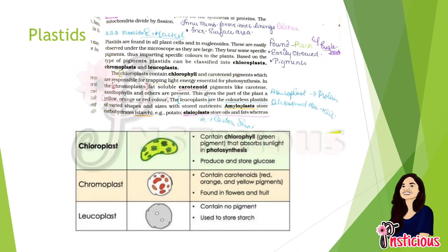Plastids were discovered by Haeckel and are found in plants and also in euglenoids. They have different types of pigmentation: chlorophyll is present in chloroplasts, and carotenoid pigments such as carotene and xanthophylls are present in chromoplasts, which depict yellow, orange, or red colors.